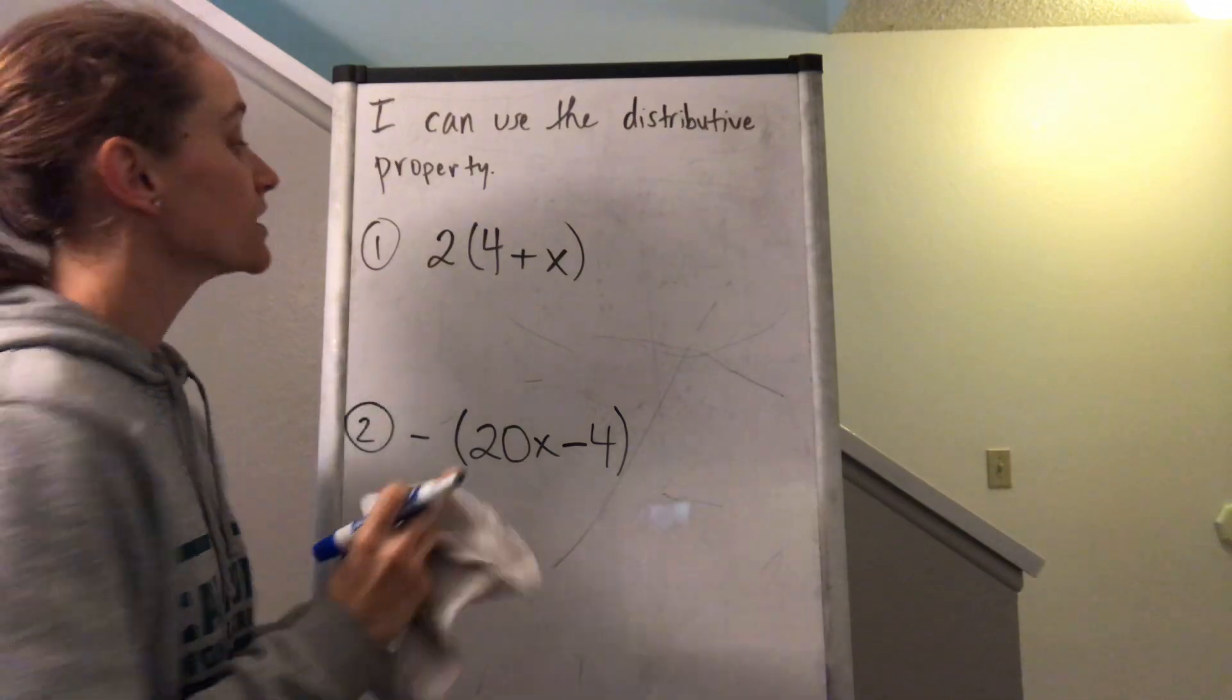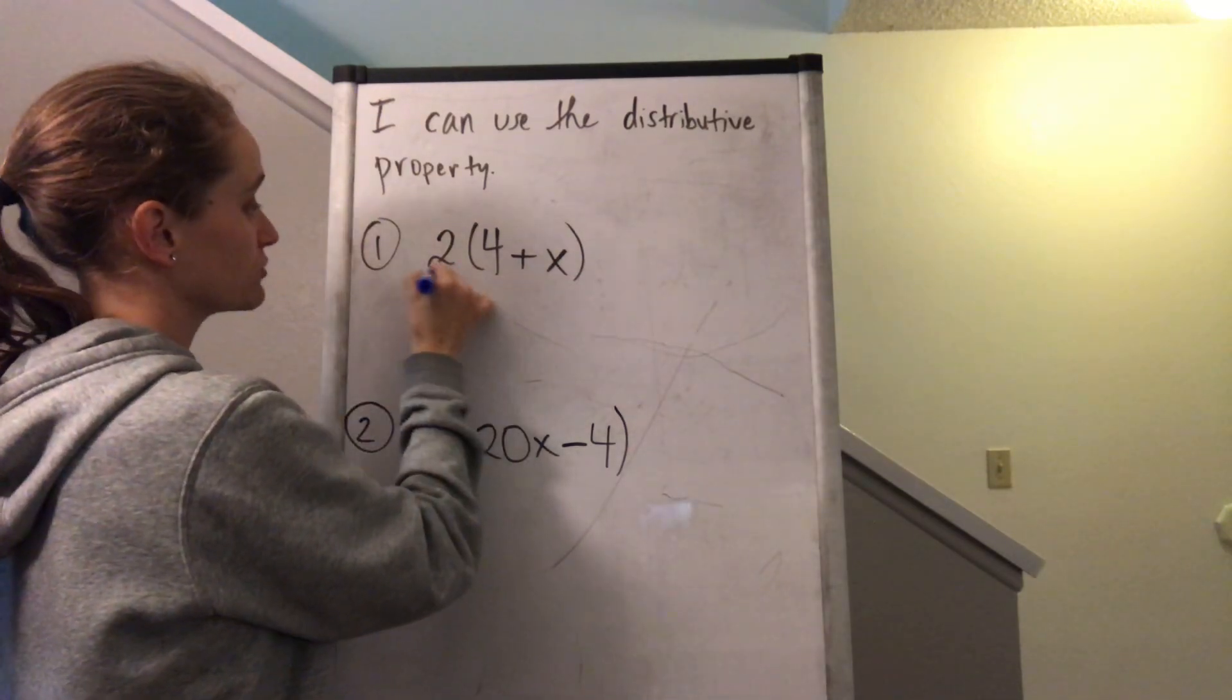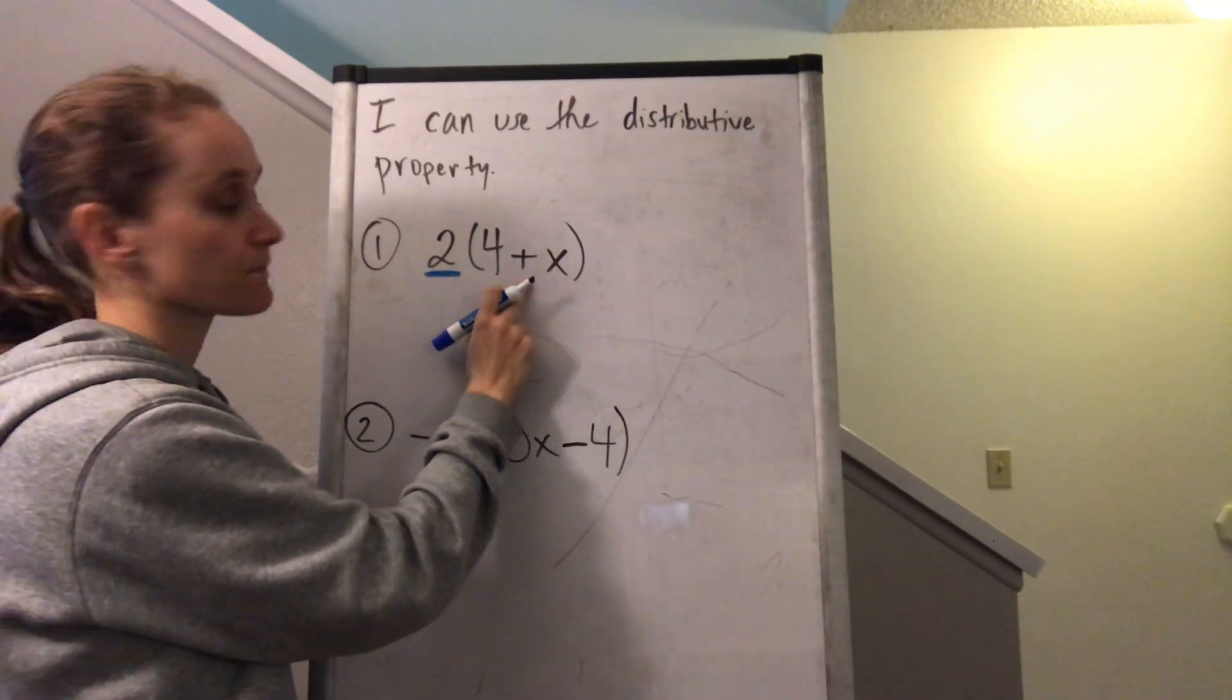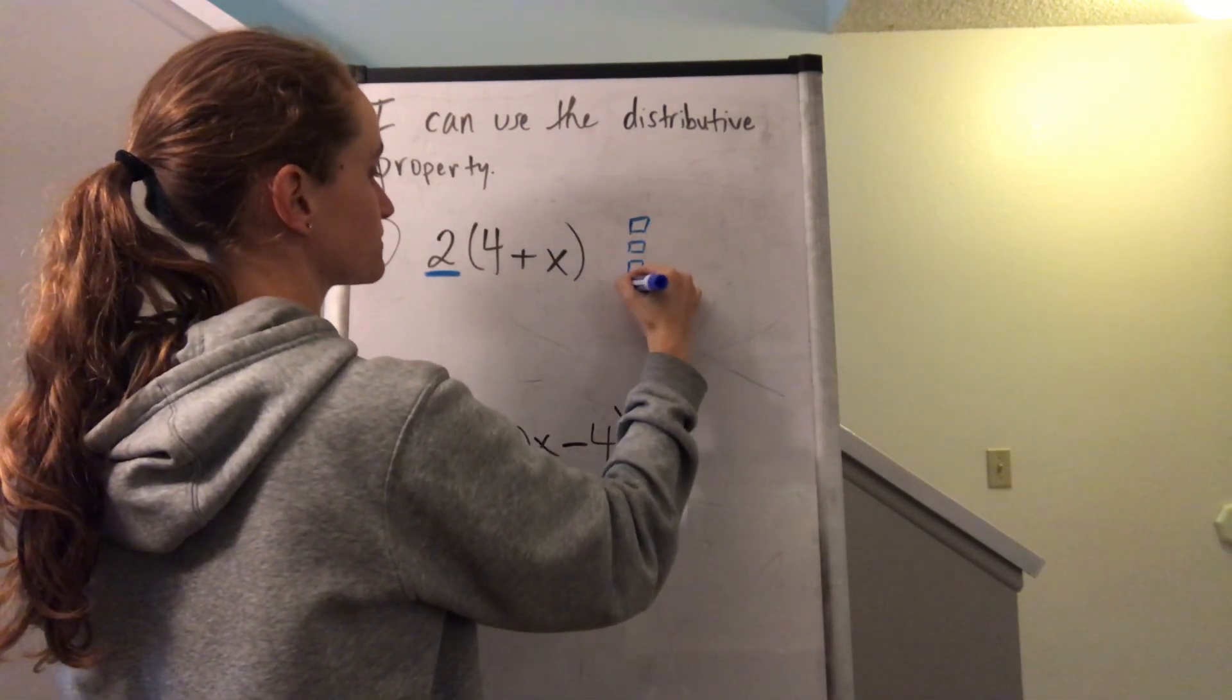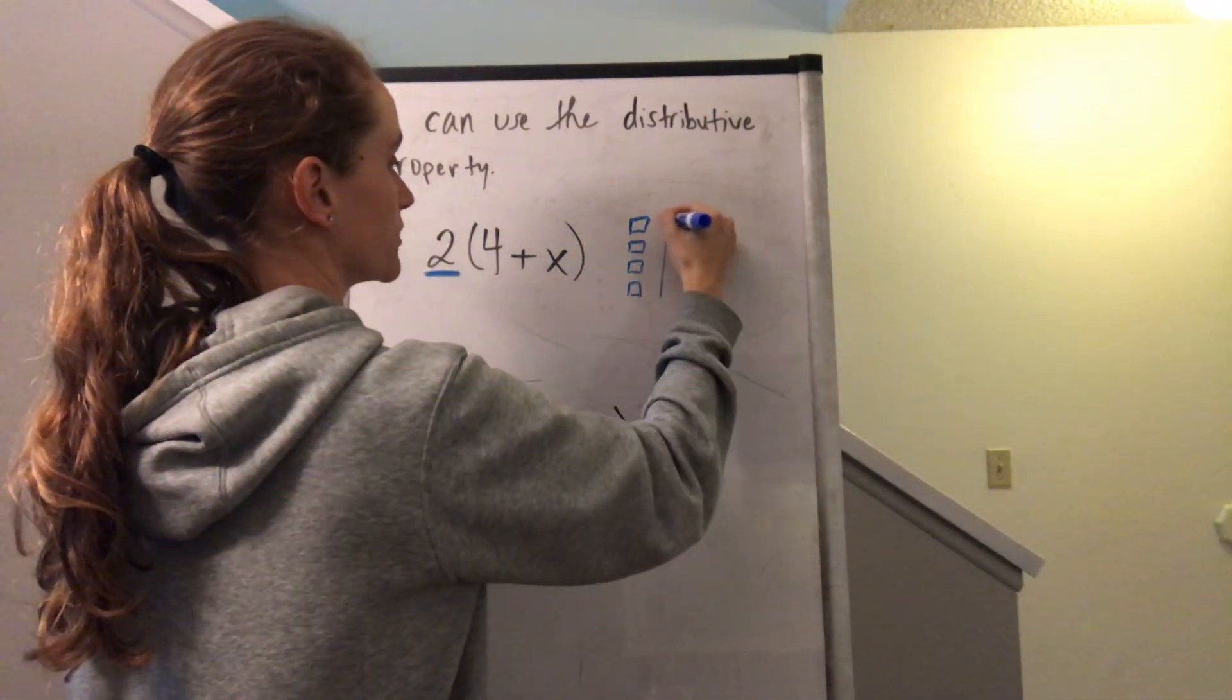And if I was using the tiles, it's basically saying that I have two groups of whatever's inside here. So remember, four means I have four of the little units, the little squares, and then the X would be the big one.